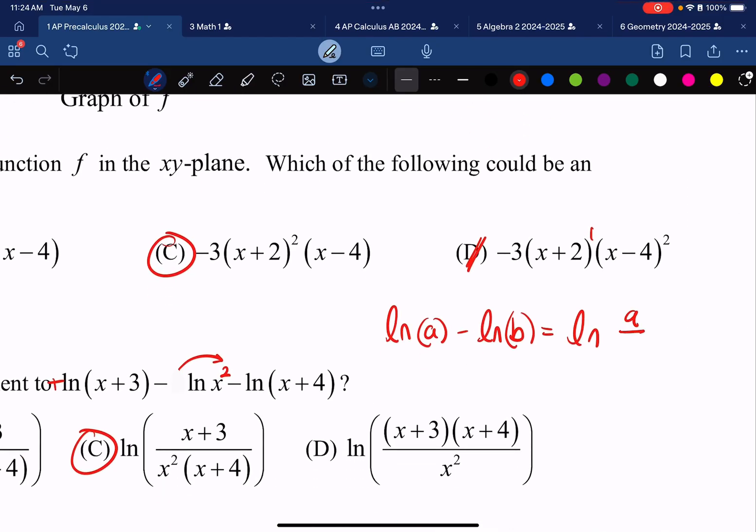This is equal to the natural log of A divided by B. And the shortcutty method that I said is, hey, if it's a negative out in front, it's on the bottom. If there's a positive out in front, it goes to the top.